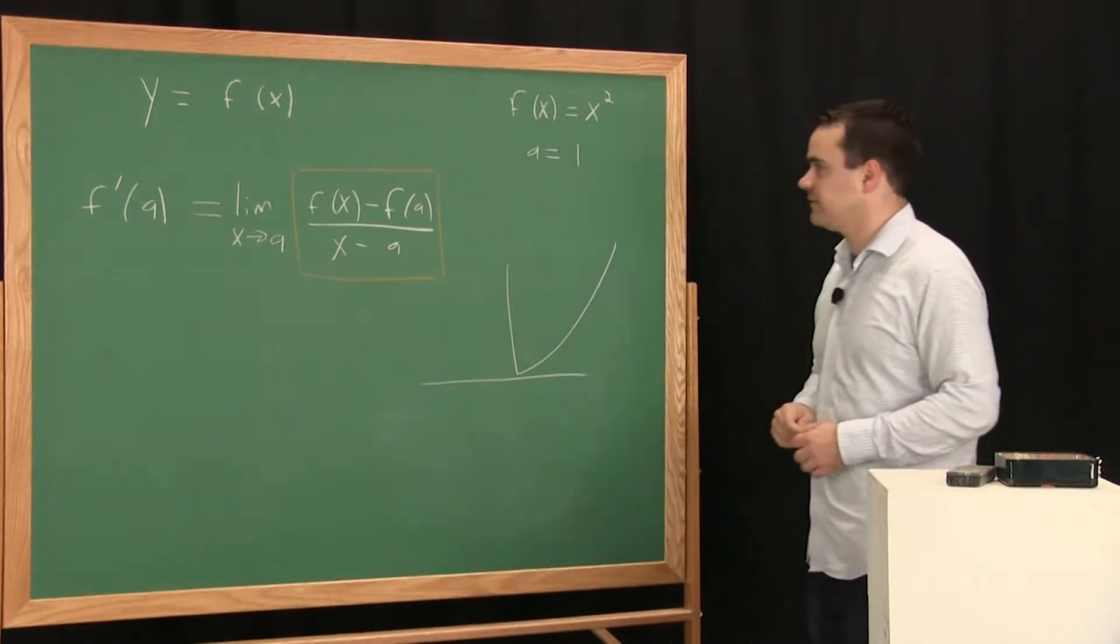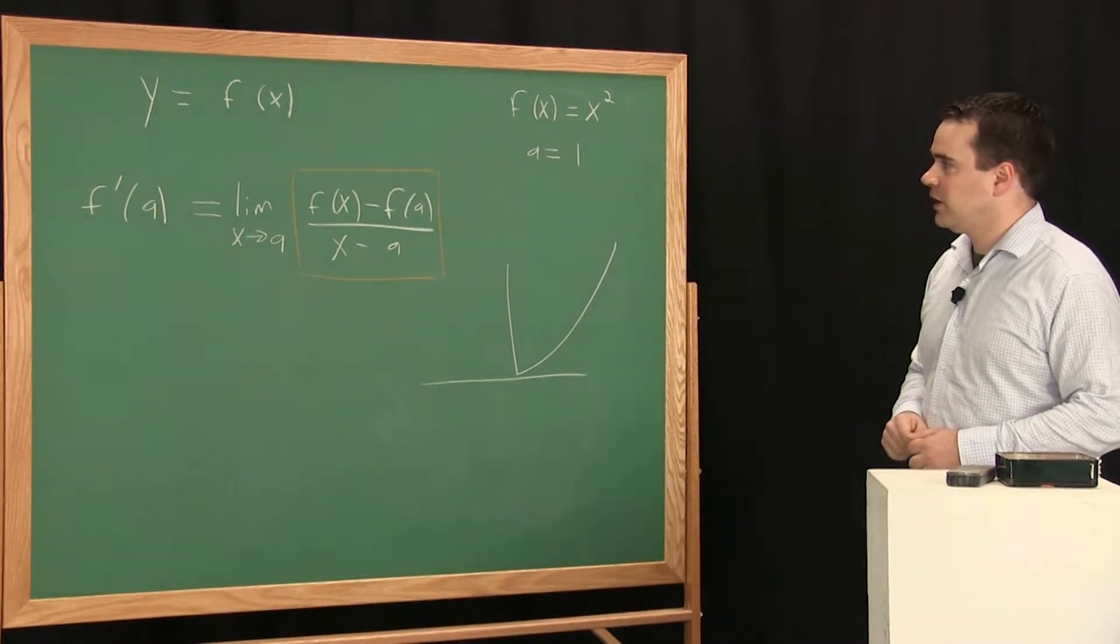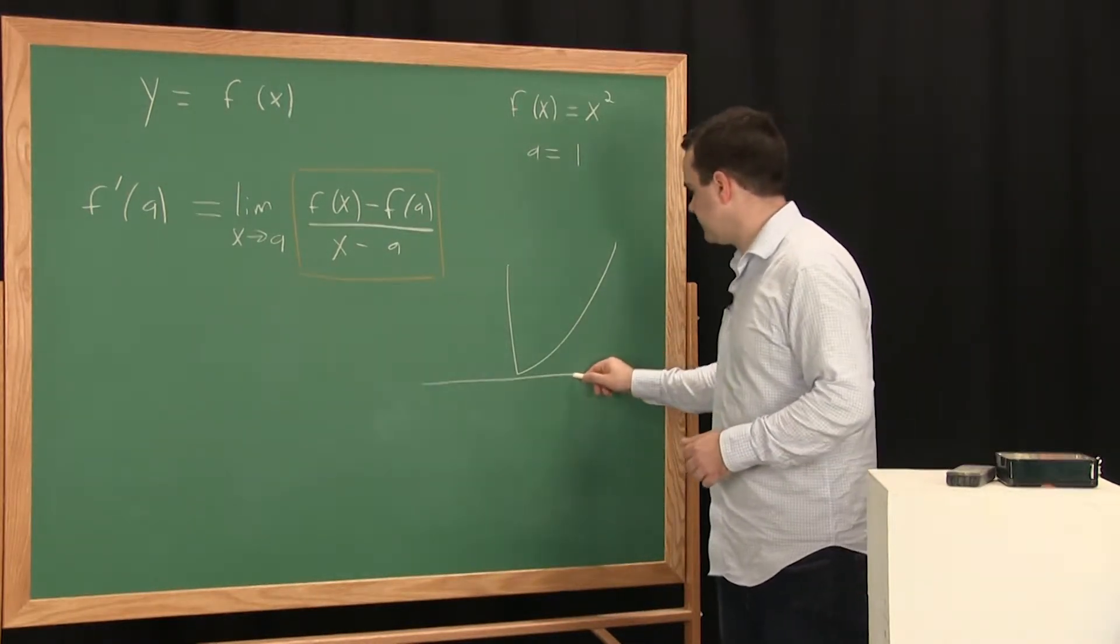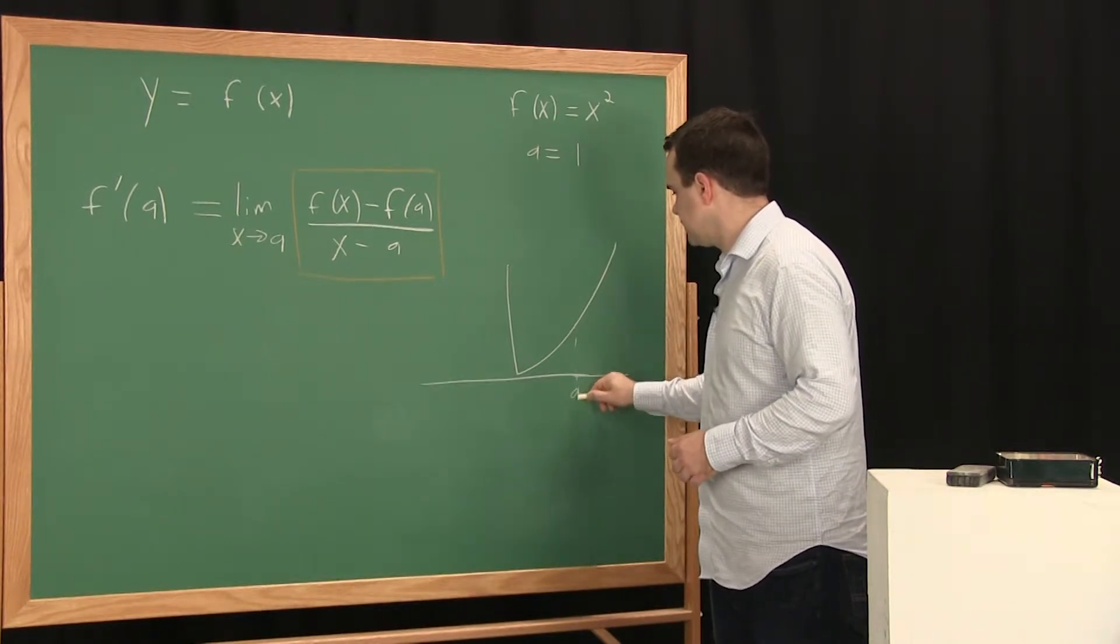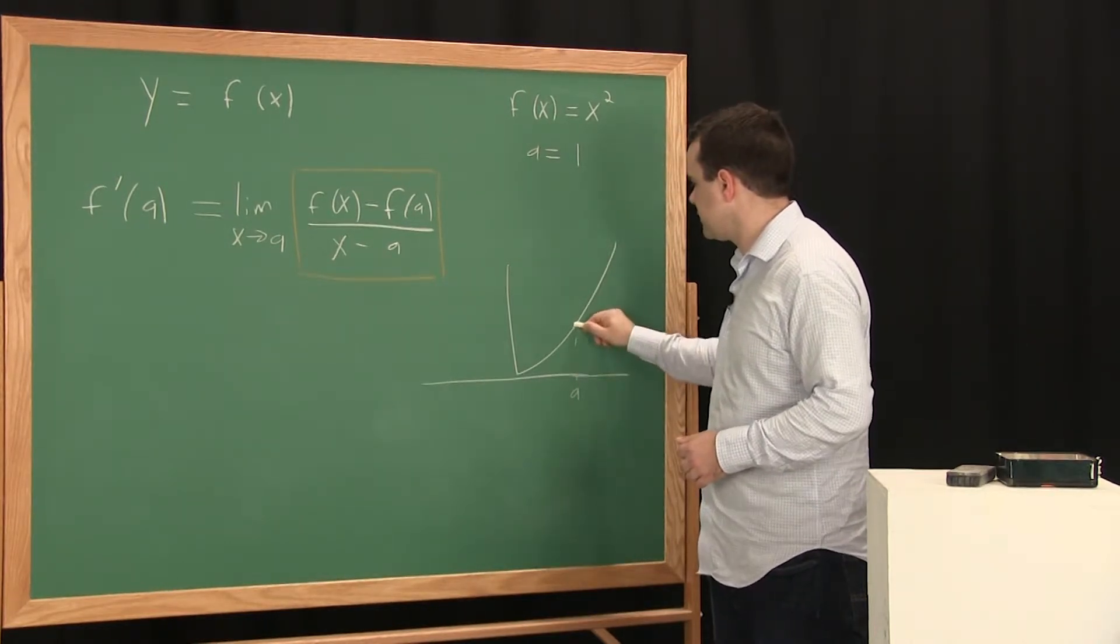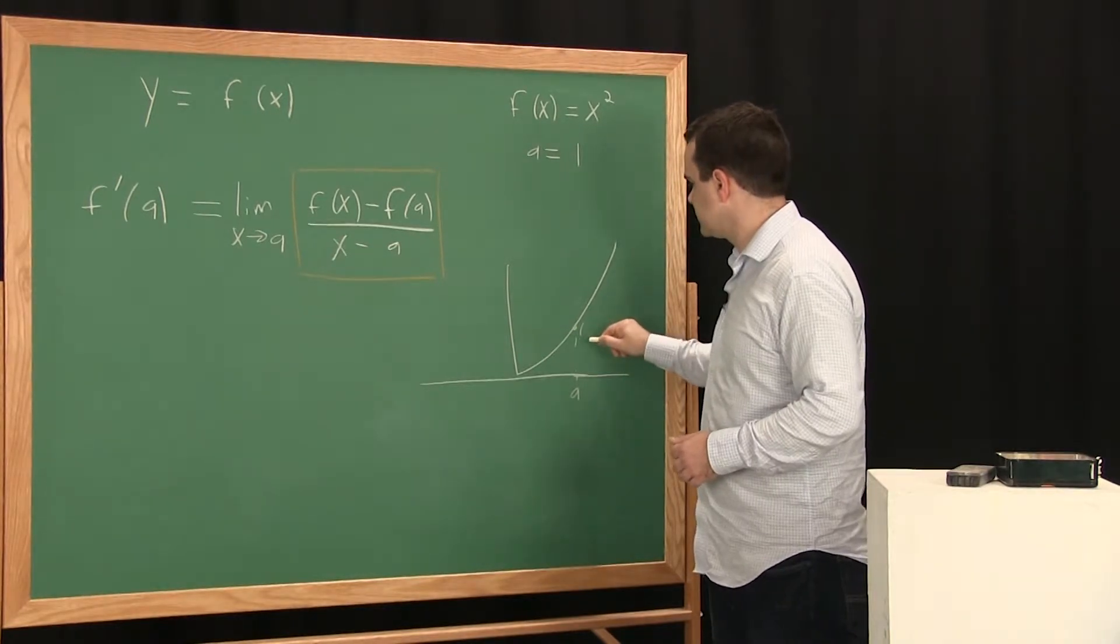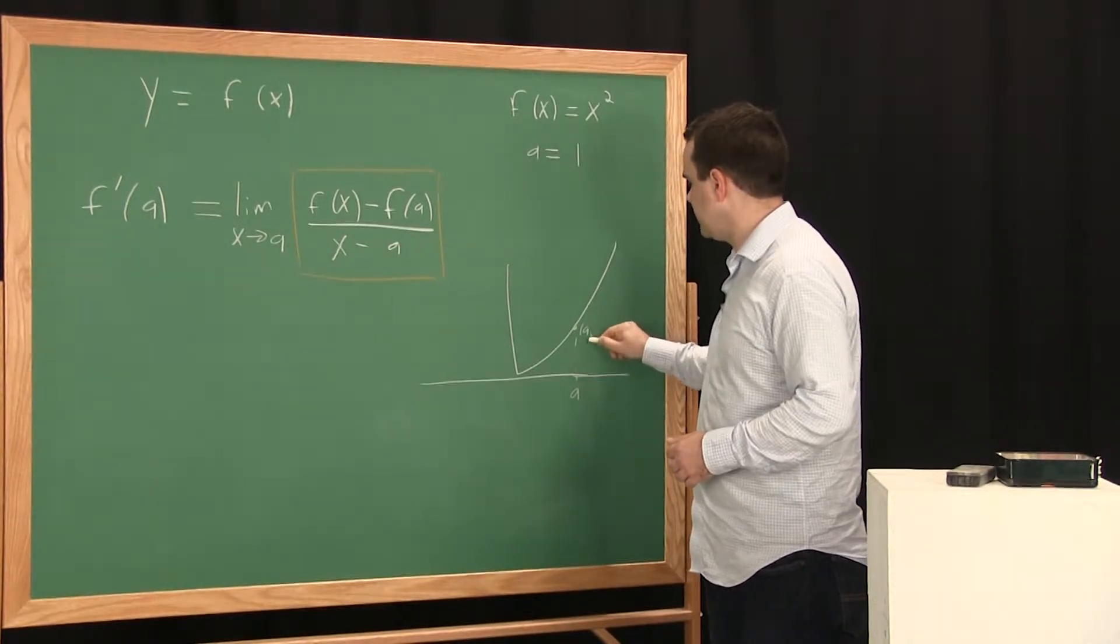So you've got x squared, for instance, and you picked a point, maybe x equals a equals whatever. And so here it is on the graph. It's a and f of a.